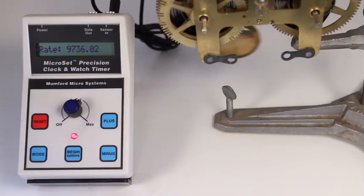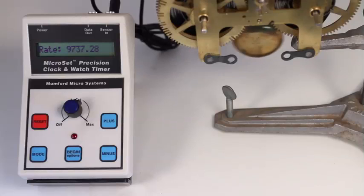The blanking window is a very important feature of microset and you should understand how it works. It causes microset to ignore any sounds that occur outside a window of time when the tick is likely to occur.